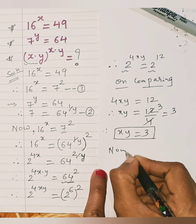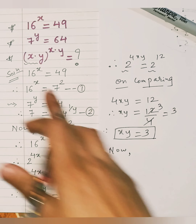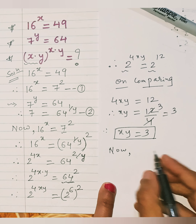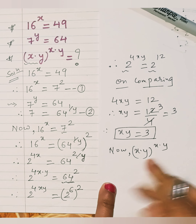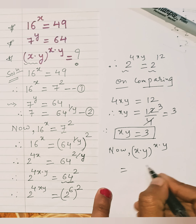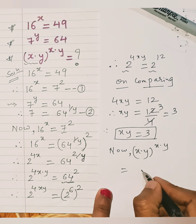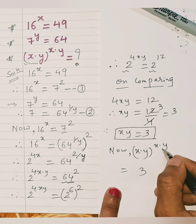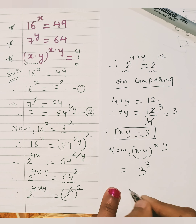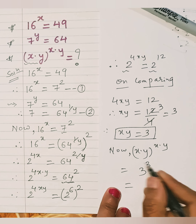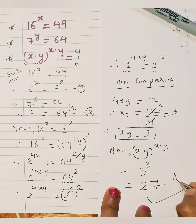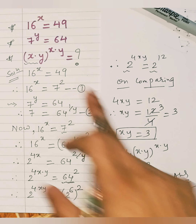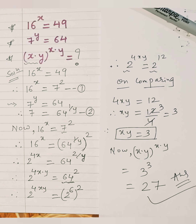We have found that x times y equals 3. Now we can find the value of xy raised to xy, which is 3 raised to 3. That equals 3 times 3 times 3, which is 27. So 27 is our final answer. I hope you understood this solution.